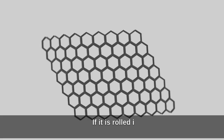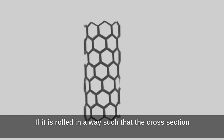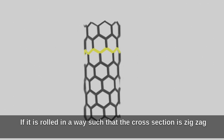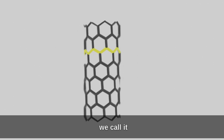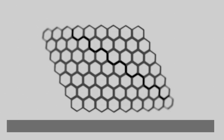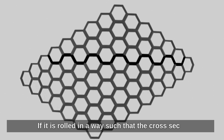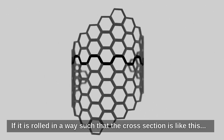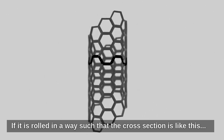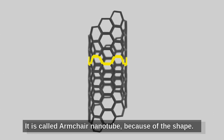If it is rolled in a way such that the cross section is zigzag, we call it a zigzag nanotube. If it is rolled in a way such that the cross section is like this, it is called an armchair nanotube because of the shape.